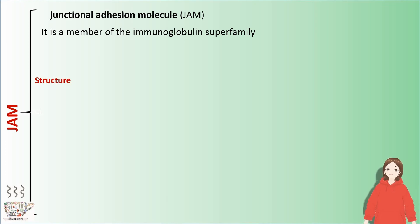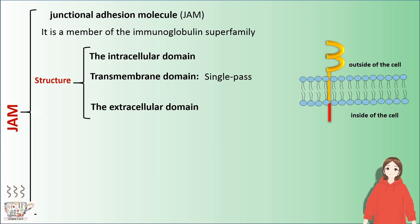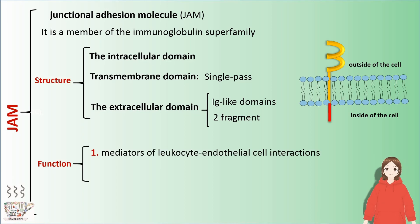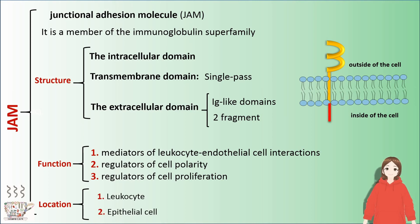JAM has three domains in its structure: the intracellular domain, the single-pass transmembrane domain, and the extracellular domain that has two Ig-like domains. JAMs play a role as mediator of leukocyte-endothelial cell interactions, as regulator of cell polarity, and as regulator of cell proliferation. JAMs are found in leukocytes, epithelial cells, endothelial cells, and platelets.